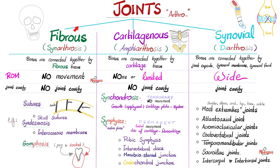As for joints, we have fibrous joints, cartilaginous joints, and synovial joints. Fibrous joints are also known as synarthroses — same because they are fused together. Arthro means joint, osis means condition. Bones are connected together by fibrous tissue, hence fibrous joint. Range of motion: there is no movement. There is no joint cavity. We have three examples: the sutures of your skull, the interosseous membranes, and the peg-and-socket fibrous joint in your teeth.